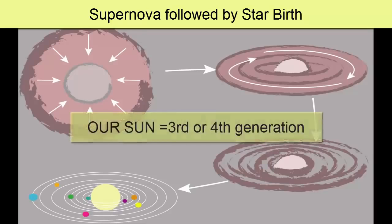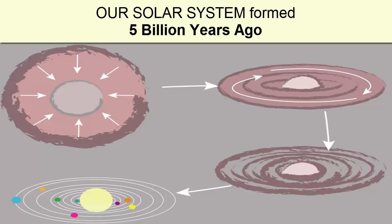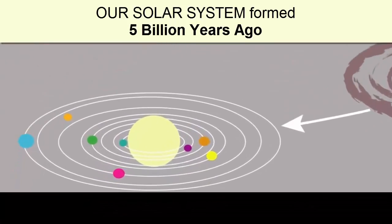Astronomers believe that our Sun is likely a third or fourth generation star. Our solar system coalesced from a supernova remnant five billion years ago. We call our central star the Sun.